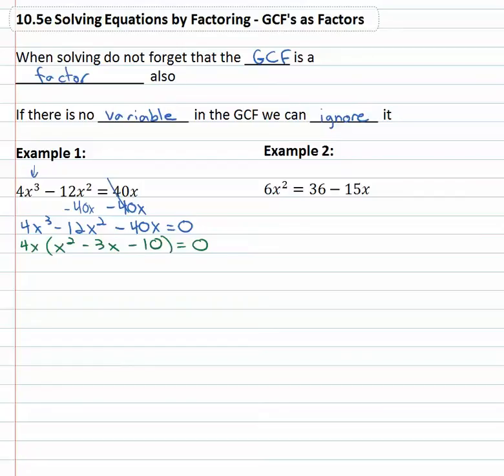Continuing to factor then, we've got the 4x out front and we can factor what's left. With the one in front of the x², we know it's going to be x times x and we need to multiply to ten and add to three.